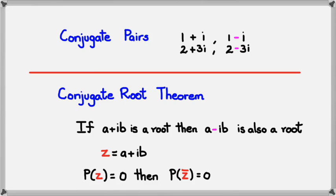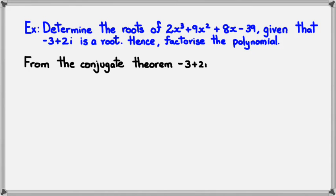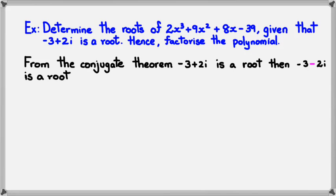Let's have a look at an example to get the hang of this. The question: determine the roots of 2x³ plus 9x² plus 8x minus 39, given that minus 3 plus 2i is a root, and then factorize the polynomial. We've been given one clue, and we know from the conjugate root theorem that if minus 3 plus 2i is a root, then minus 3 minus 2i is also a root.